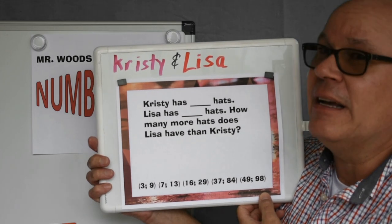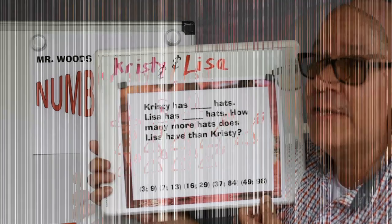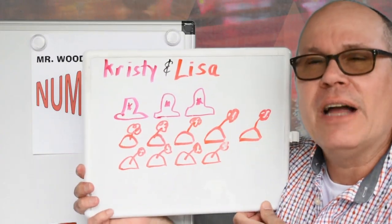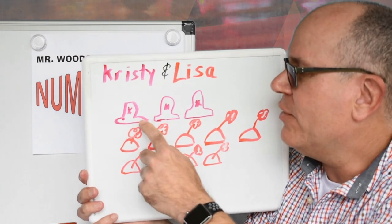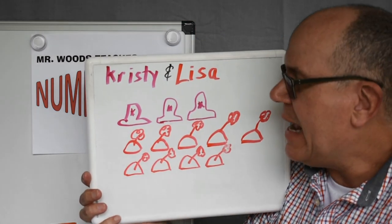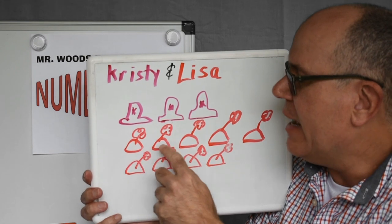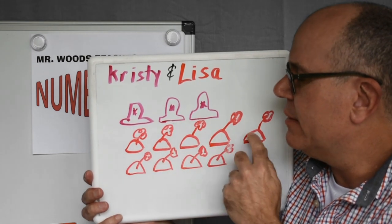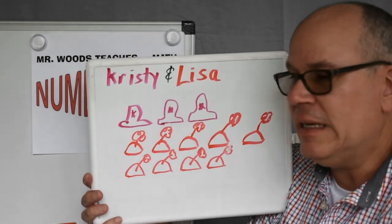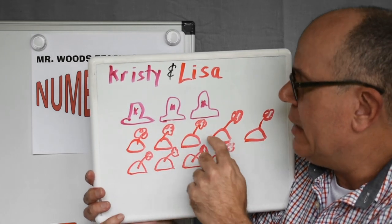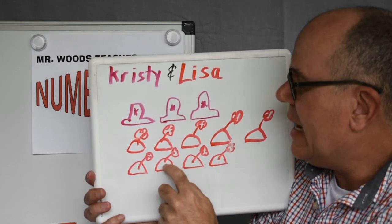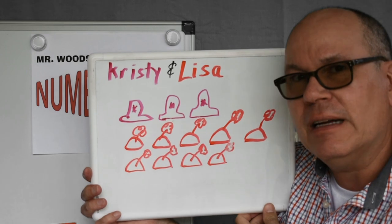How would you figure that out? I think a picture is in process. I drew out how many hats Christy has, and I drew out how many hats Lisa has. So we have 1, 2, 3 for Christy, and 1, 2, 3, 4, 5, 6, 7, 8, 9 for Lisa.